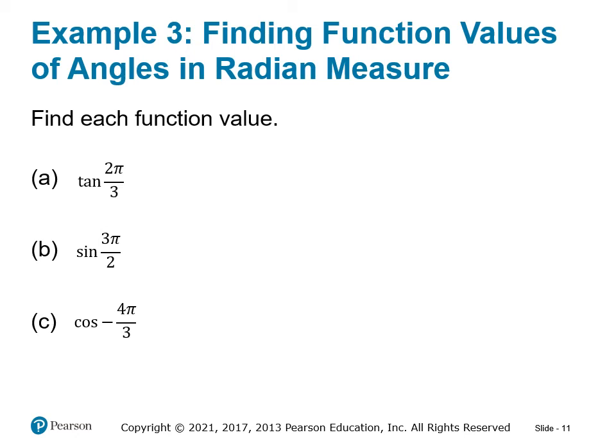The last calculations we want to do are to find trig function values using radian measures. Hit pause here. What you want to do is convert the radian angle to a degree angle — since that's what you're familiar with — and then use reference angles or your circle table to find the trig function for parts a, b, and c. Convert the angle and then find the trig value.